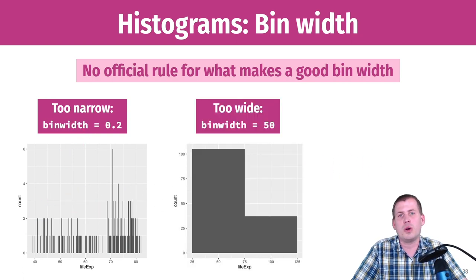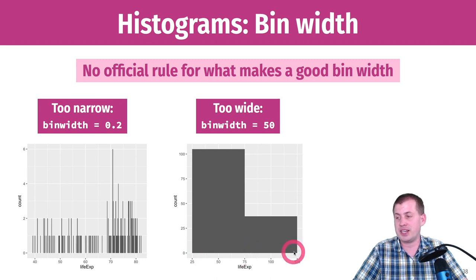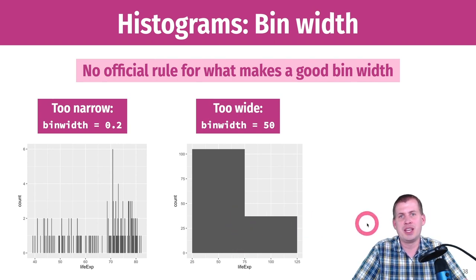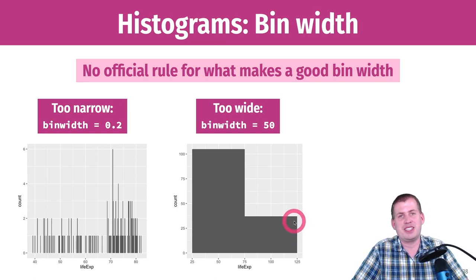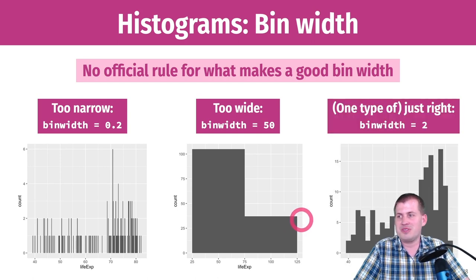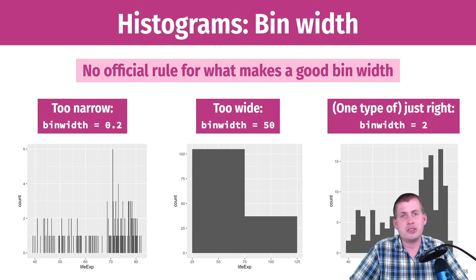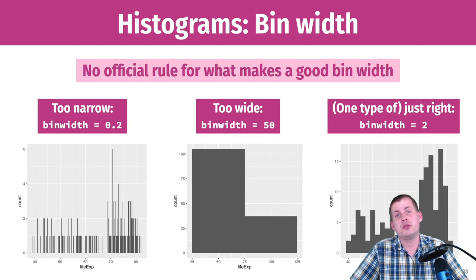You also don't want bins too wide. A bin width of 50 goes from 25 to 75 and then 75 to 125 years — showing about 100 countries between 25 and 75, and about 30 between 75 and 125. That's misleading because no country has a life expectancy of 125. A better bin width here is around 2, where each column represents two years, like 39 to 41, then 43 to 45. You could also try every 5 or 10 years.